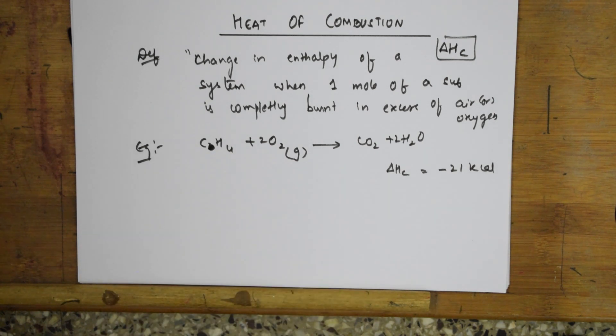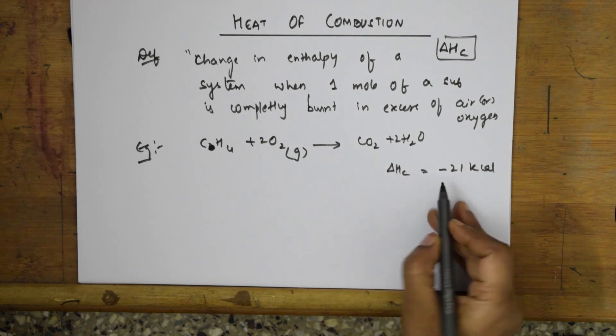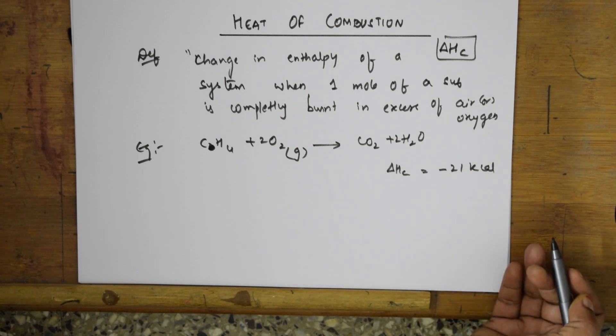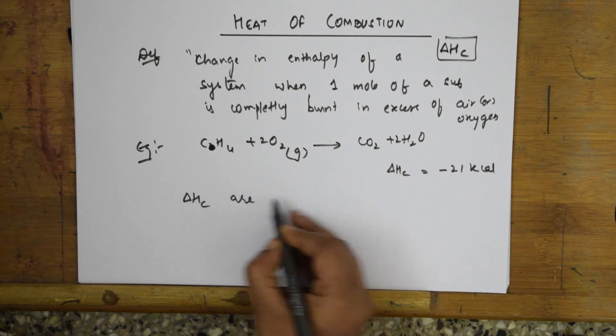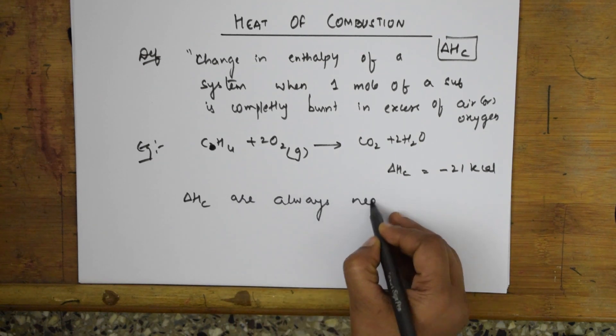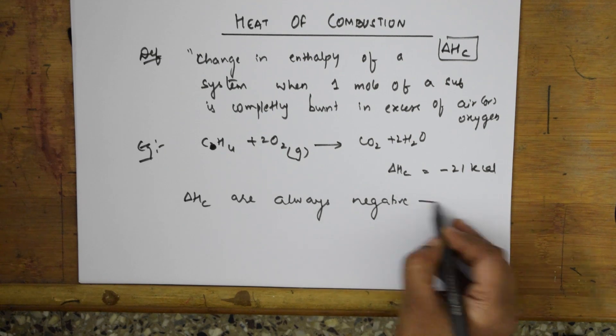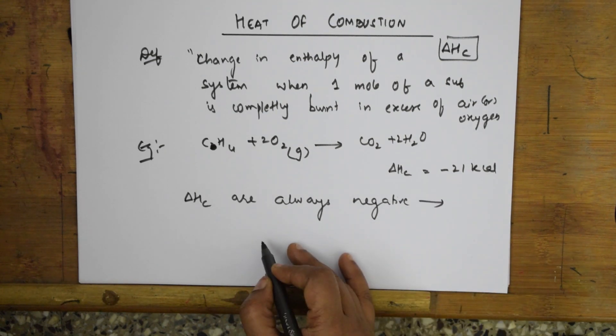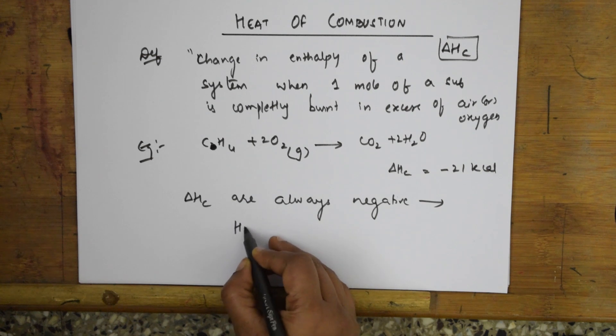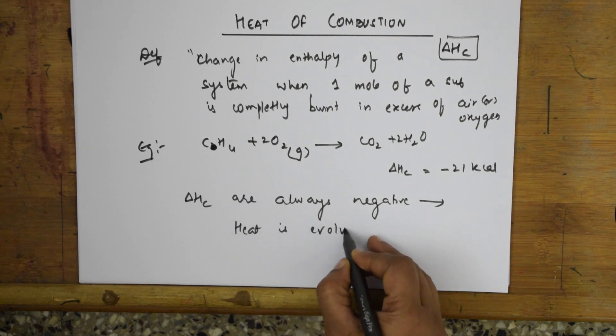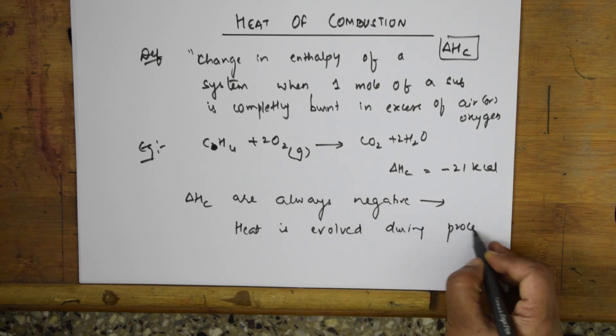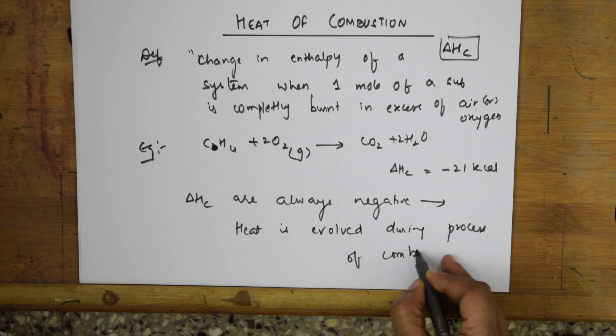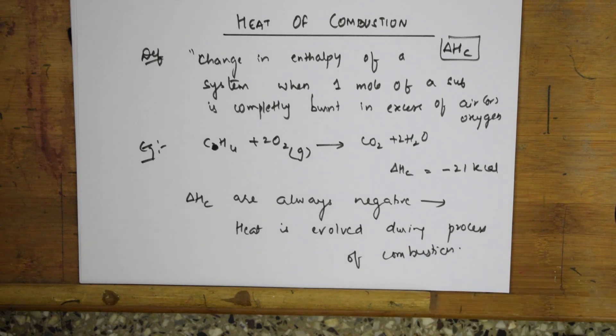Heat of combustion is always negative basically. Why? Because there is a lot of heat which is evolved during the process. Remember delta Hc values are always negative. It means a lot of heat is evolved in the process of combustion. This is your heat of combustion.